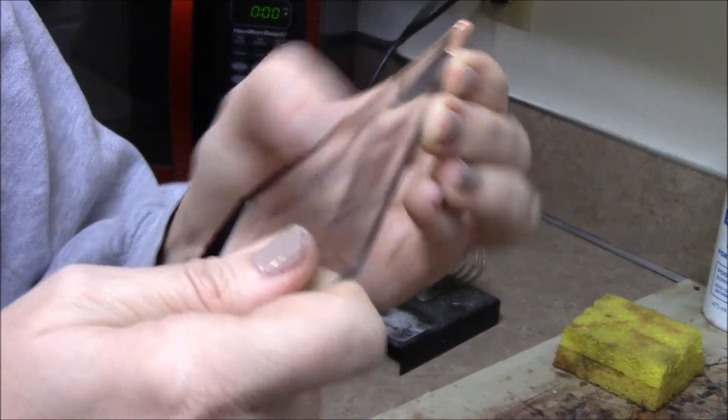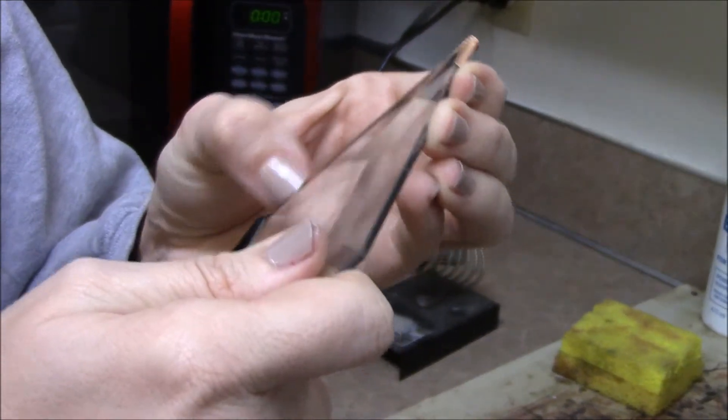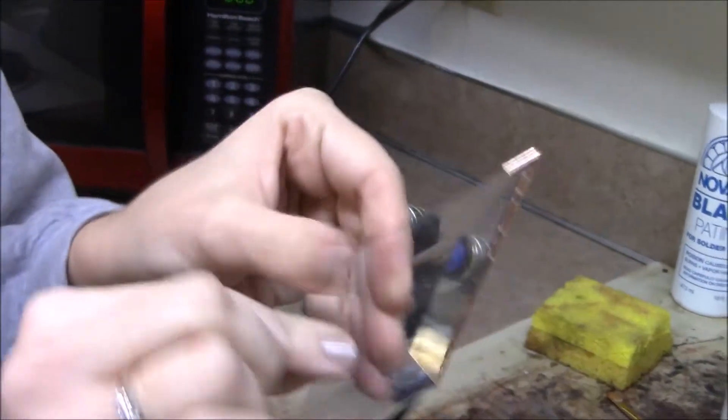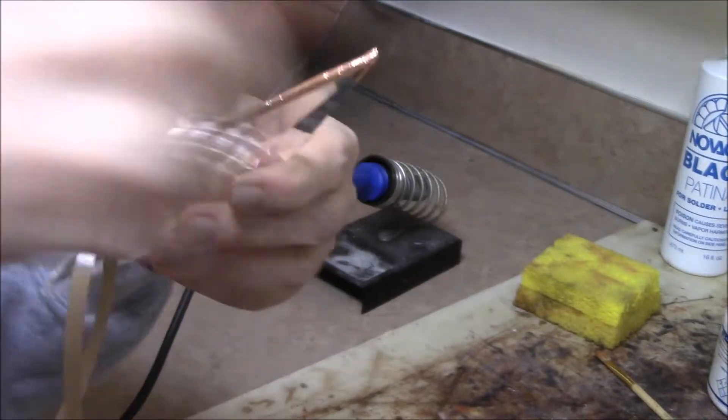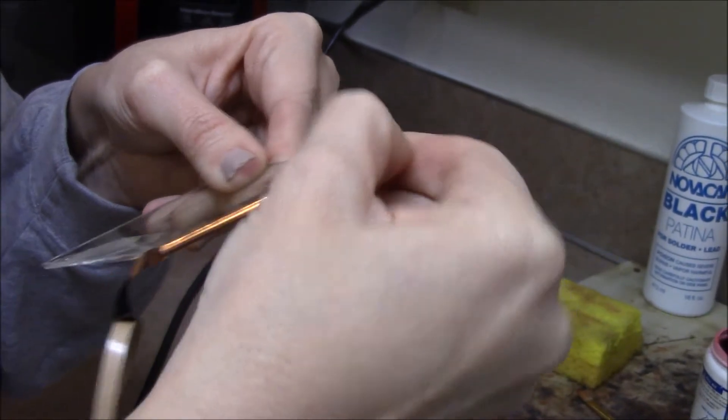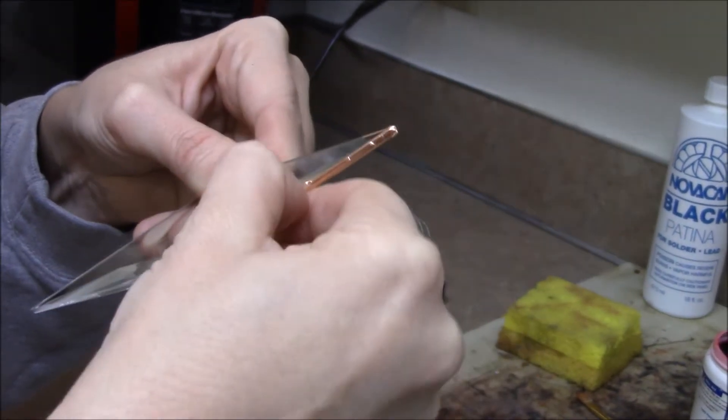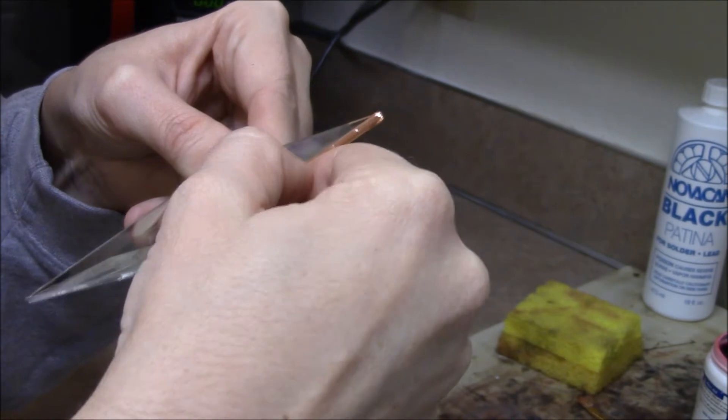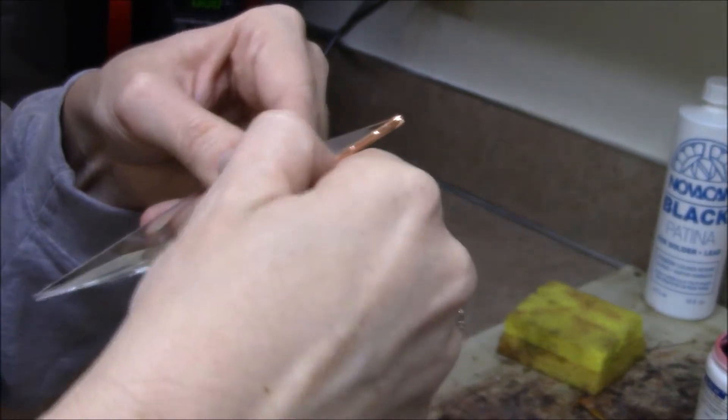This is, we'll call this redneck burnishing because really you should take like the end of a Sharpie pen and just kind of rub all your air bubbles out. But I've got great fare nails, so I can do it. So what kind of metal is the tape? It's just copper on this side. It's copper.